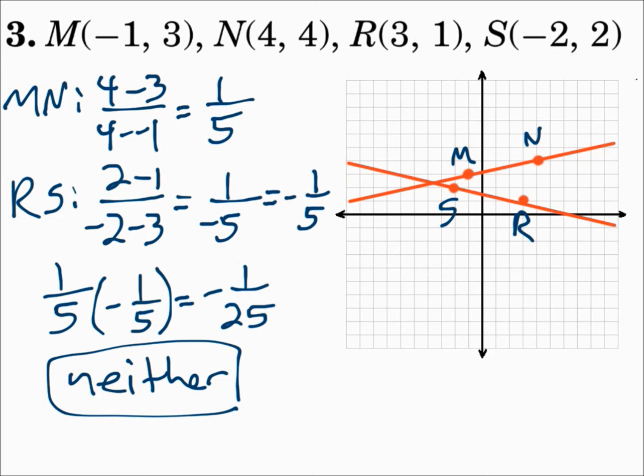Remember: if the slopes are the same, they're parallel. If the slopes are negative reciprocals, they're perpendicular. Otherwise, it's neither.